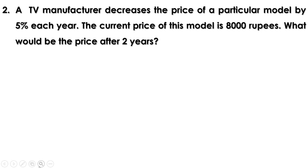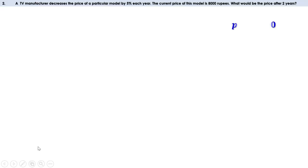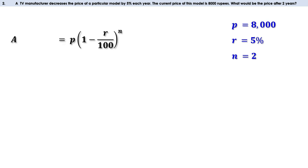Next problem: a TV manufacturer decreases the price of a particular model by 5% every year. The current price of the model is 8000 rupees. What would be the price after two years? Here the price decreases by a fixed rate every year, so we use the same equation with a small change — instead of addition we use subtraction. P is 8000, R is 5%, and n is 2.